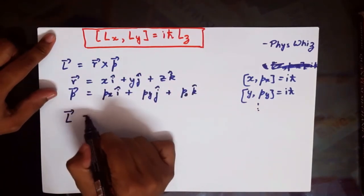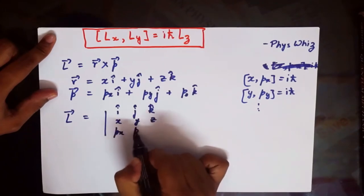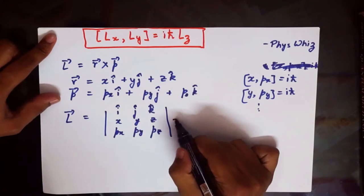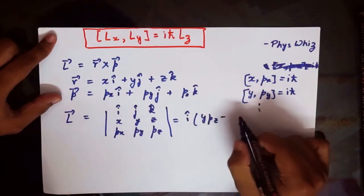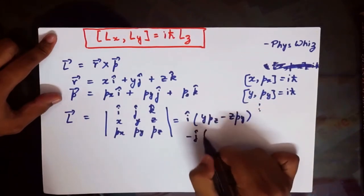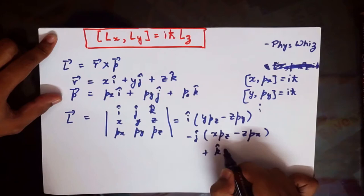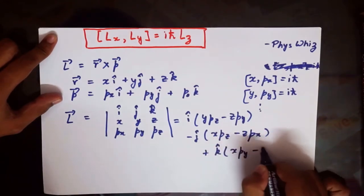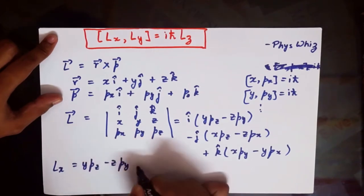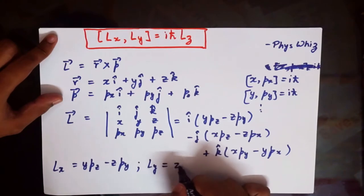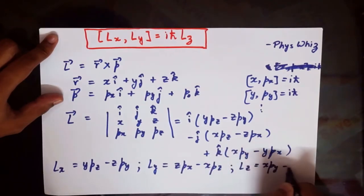To get L, we take the vector cross product. Working out the determinant, the x-component is yPz − zPy, the y-component is xPz − zPx, and the z-component is xPy − yPx. So we can write Lx = yPz − zPy, Ly = xPz − zPx, and Lz = xPy − yPx.